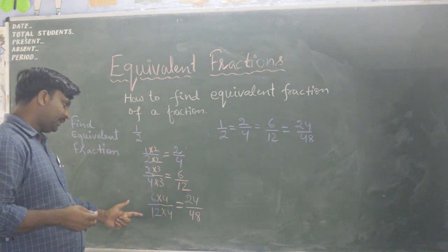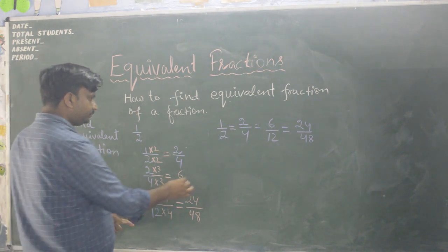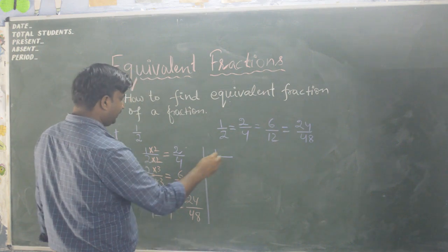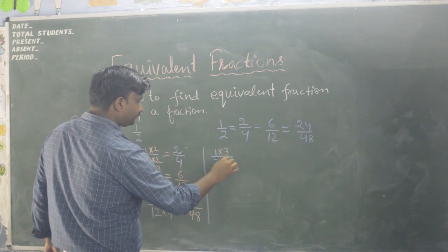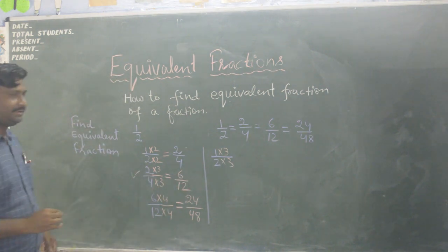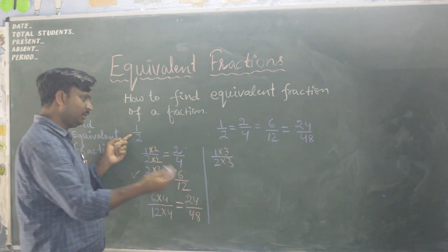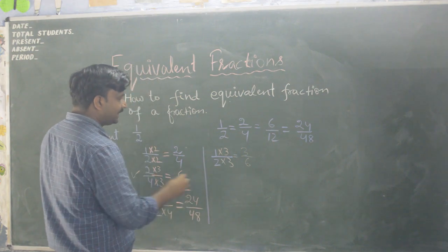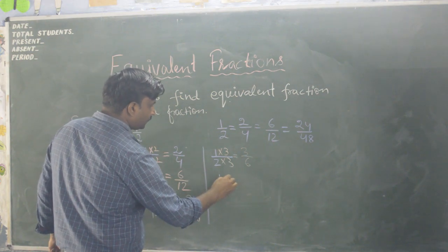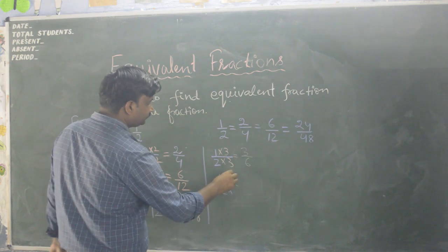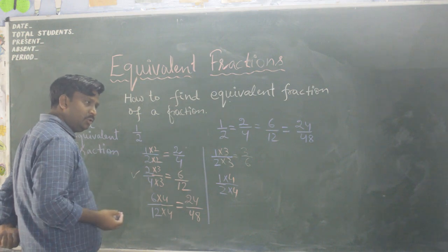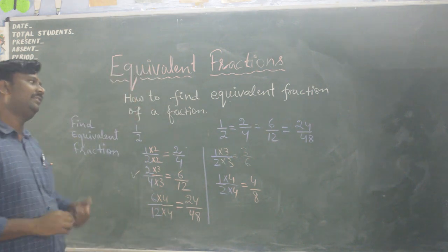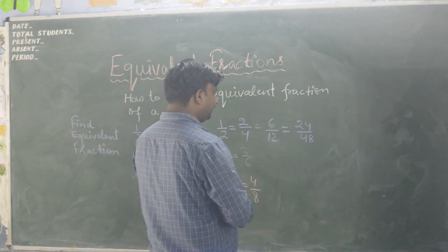We can also find equivalent fractions by multiplying with different numbers each time. Take one upon two and multiply by 3: 3 ones are 3, 3 twos are 6 — so three upon six. Multiply by 4: 4 ones are 4, 4 twos are 8 — so four upon eight. These are also equivalent fractions for one upon two.